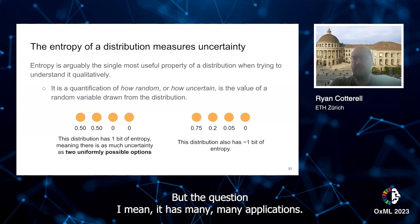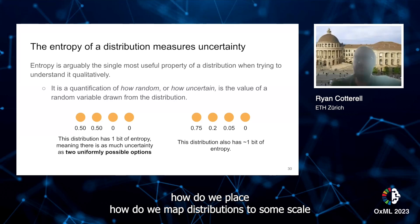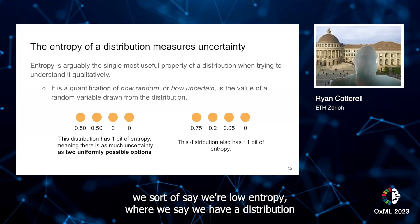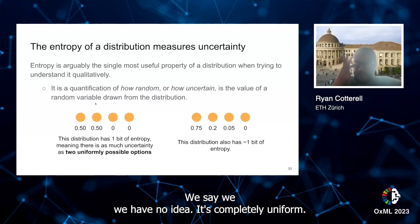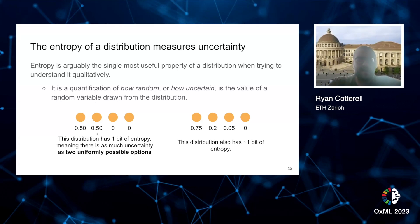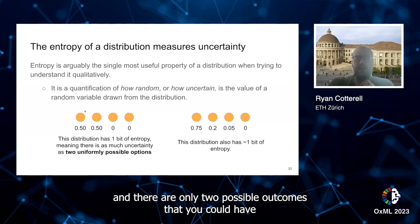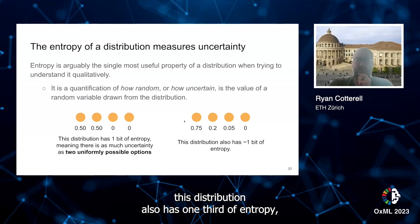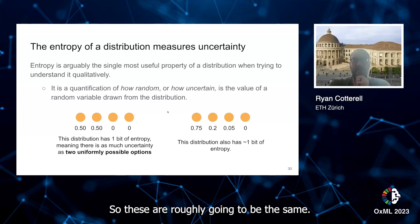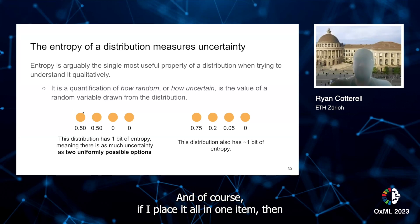The question that entropy answers is: how do we map distributions onto some scale? On one end of the scale, we say we're low entropy — we have a distribution that places maybe all its probability mass on one item. On the other end, we have no idea; it's completely uniform. For instance, this distribution on the left has one bit of entropy, with only two possible outcomes with positive probability. This distribution also has one bit of entropy but is spread out a bit more, so these are roughly going to be the same. However, if I put probability mass equally on all four, it would have much higher entropy, and if I placed it all on one item, it would have zero.